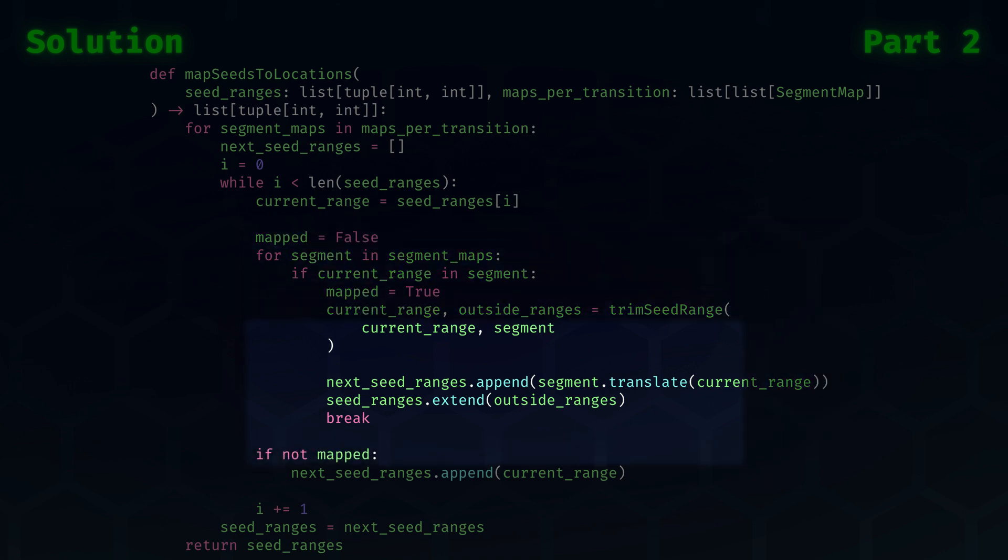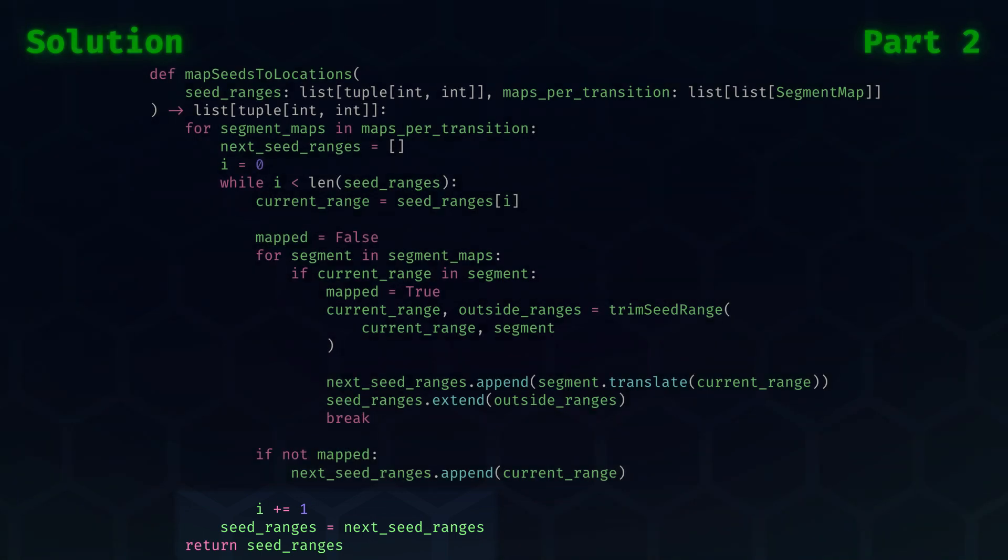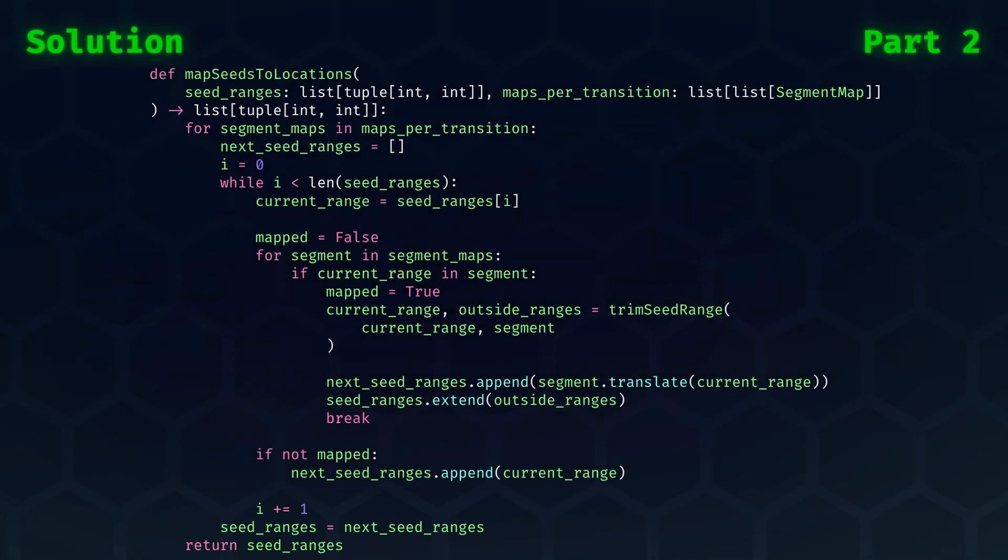Suppose we did not find any mapping, then the numbers in that range do not need to be updated, and we just append the range to the next seed ranges. Lastly, we of course need to increment i to step through our queue. And after the queue is done, we need to update our seed ranges. In the end, we went through all transitions, and we can return the seed ranges which represent the locations.